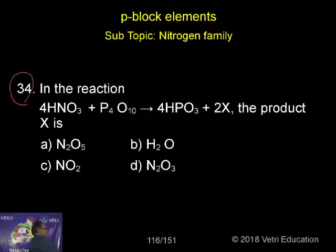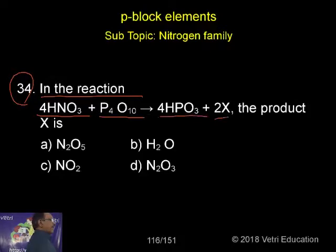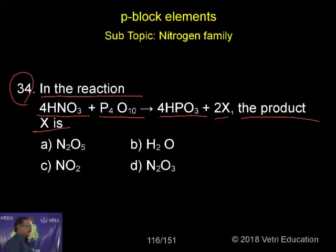Question number 34. In the reaction, nitric acid 4 moles reacts with P4O10 (phosphorus pentoxide, that means the dimer), giving metaphosphoric acid 4 moles plus 2X. What is X? It's a very simple reaction.